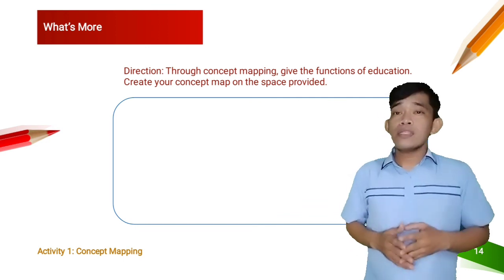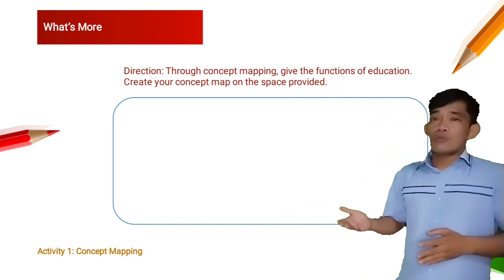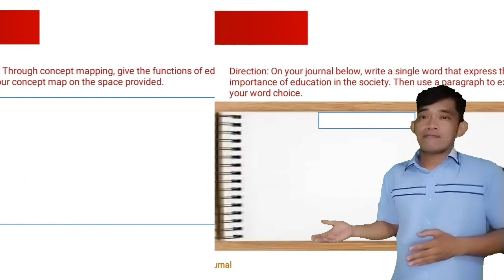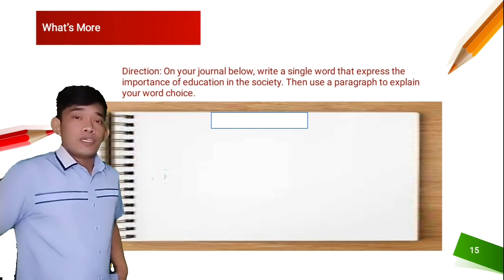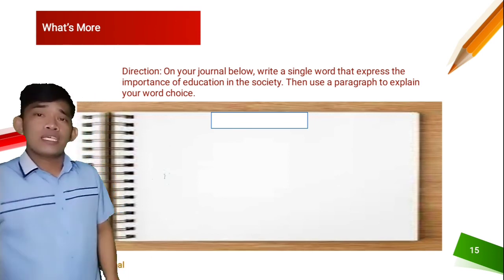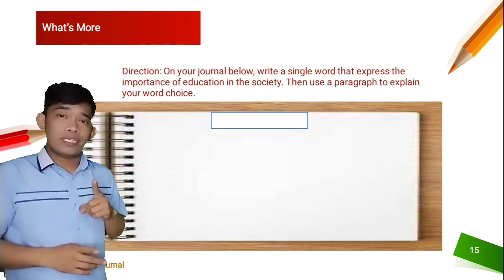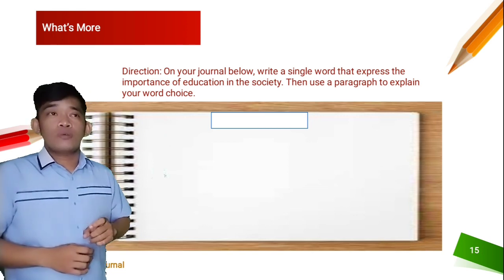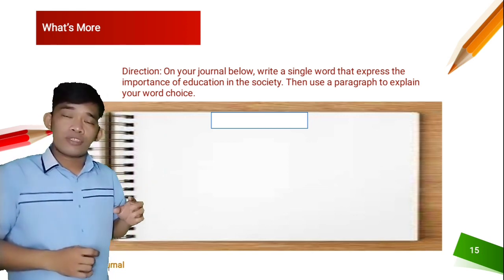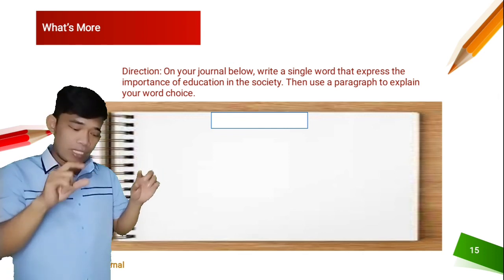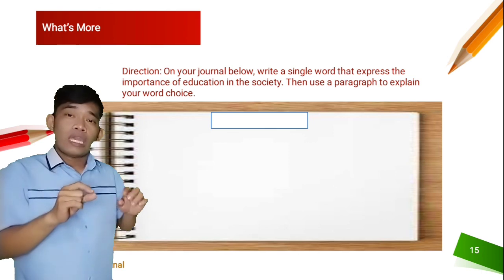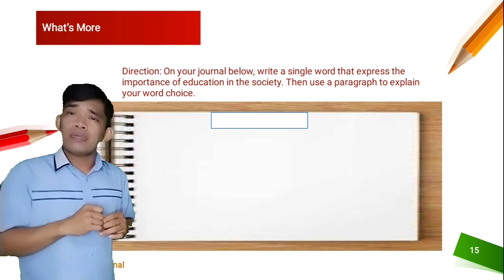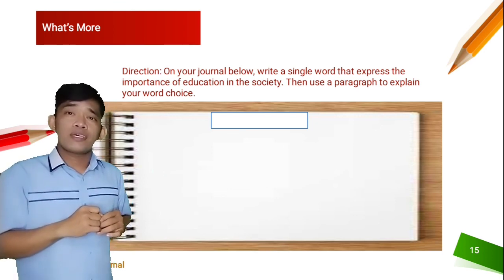For concept mapping, you may read the instruction in your module. Activity number two is the Word Journal. What are you going to do? You are going to think of one word — one word only — that best describes education for you. Write it at the top of your journal activity. Along with it, write one paragraph containing maybe four to five sentences describing the word you have chosen.